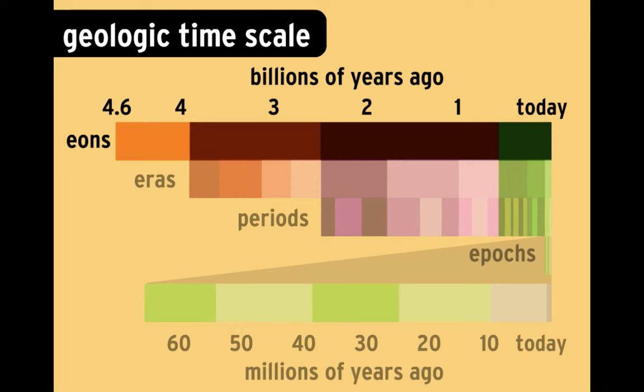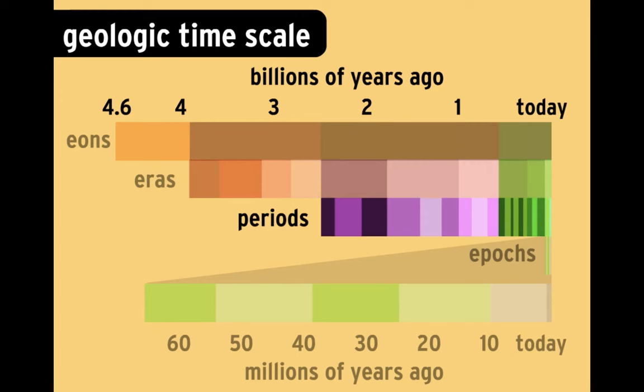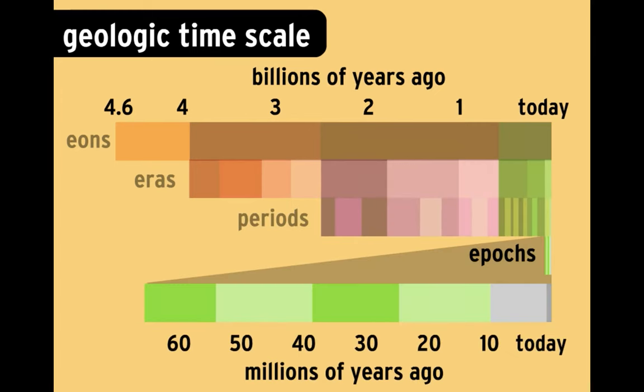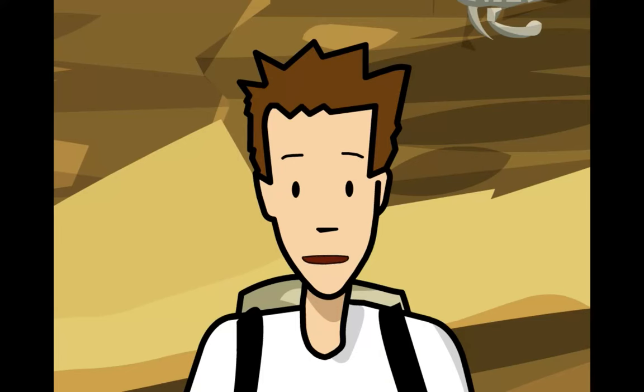Each of these eons is broken up into two or more eras, which are further broken into periods, which are broken into epochs. All these units are of relative length, so they have no set number of years. The actual length of each unit depends on what geologic changes occurred in it, so one eon could contain a single era that's longer than another.